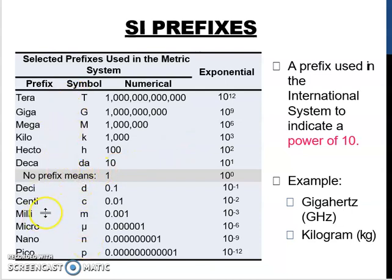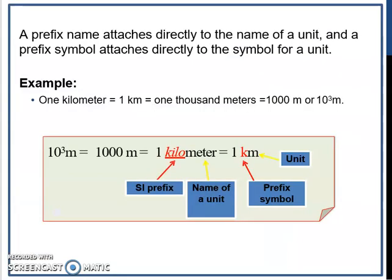A prefix name attaches directly to the name of the unit, and a prefix symbol attaches directly to the symbol for a unit. For example, 10 to the power of 3 meters equals one thousand meters, which equals one kilometer. So kilo here is the SI prefix, meter is the name of the unit, and in one km, k is the prefix symbol and m is the unit symbol.